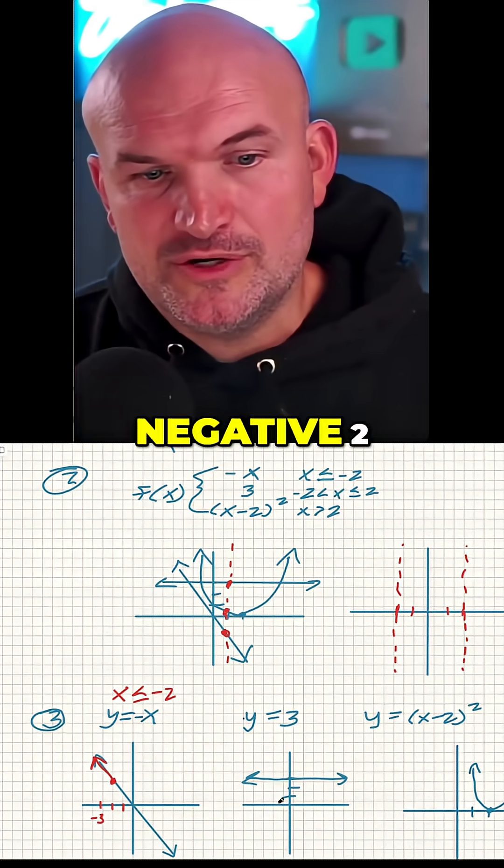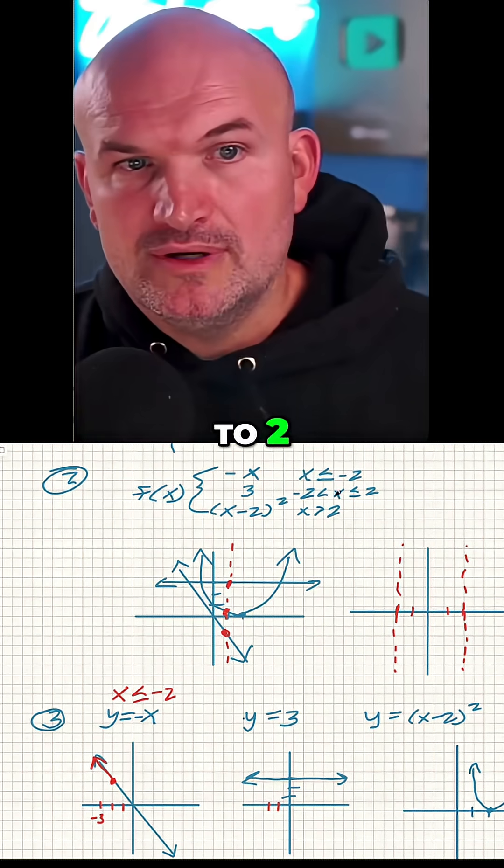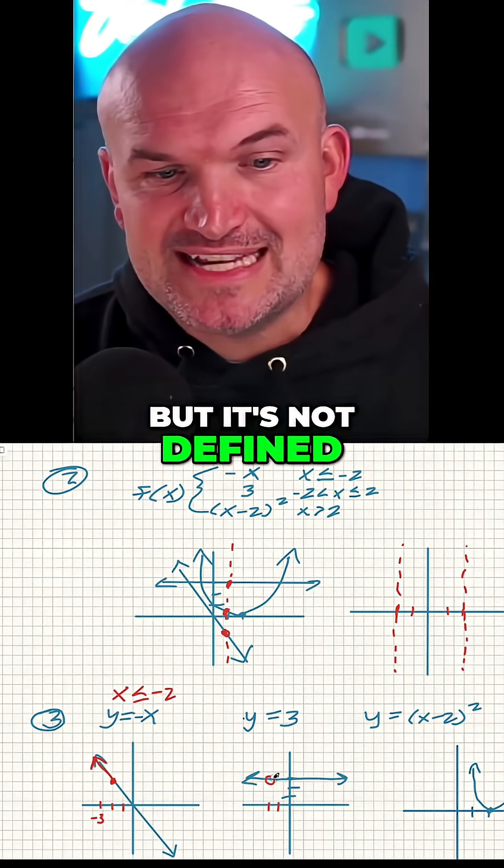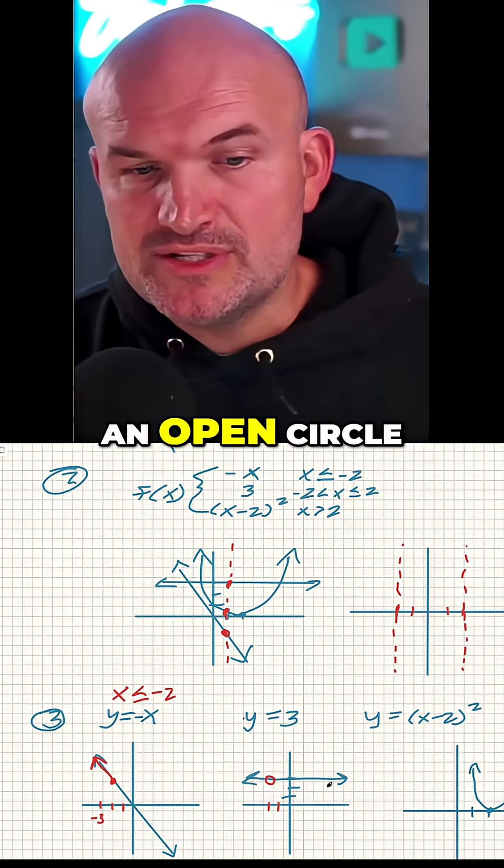Now this is going to be restricted from negative two to two. Negative two is greater, or x is greater than negative two, but it's not defined at negative two. So we're going to use an open circle.